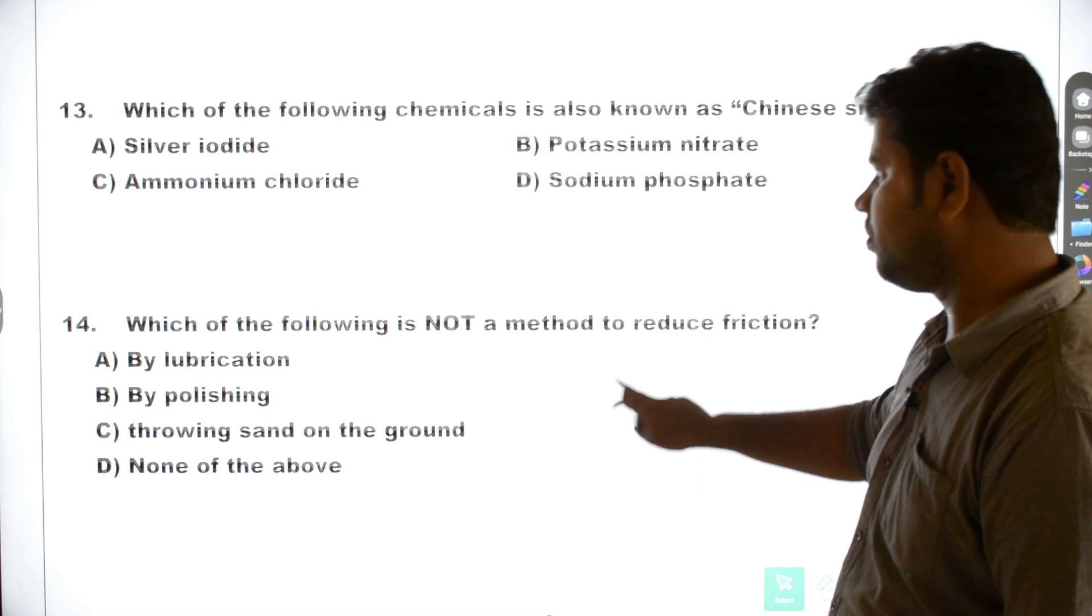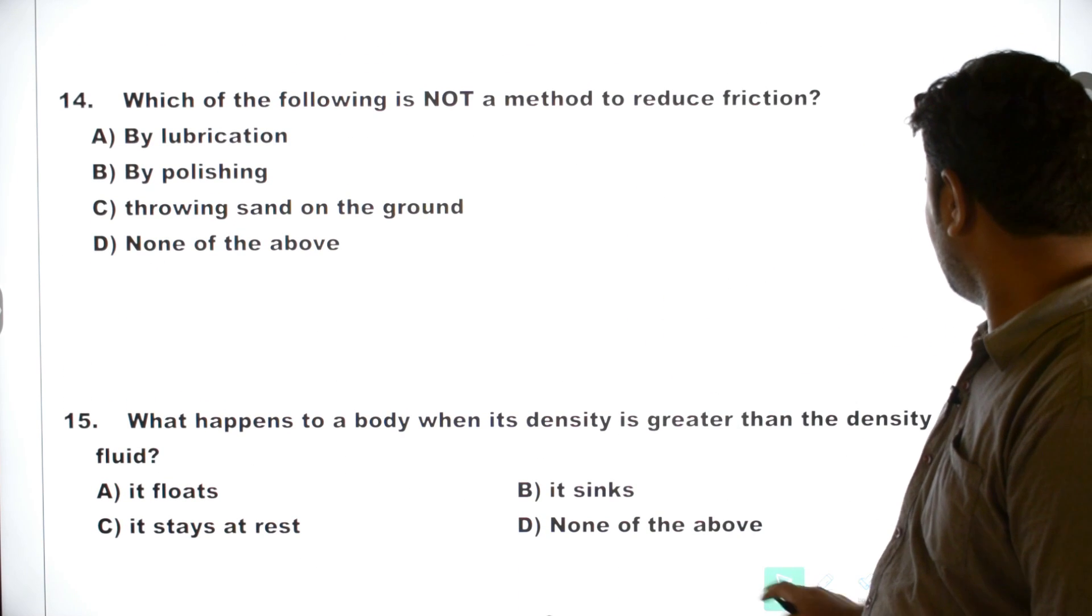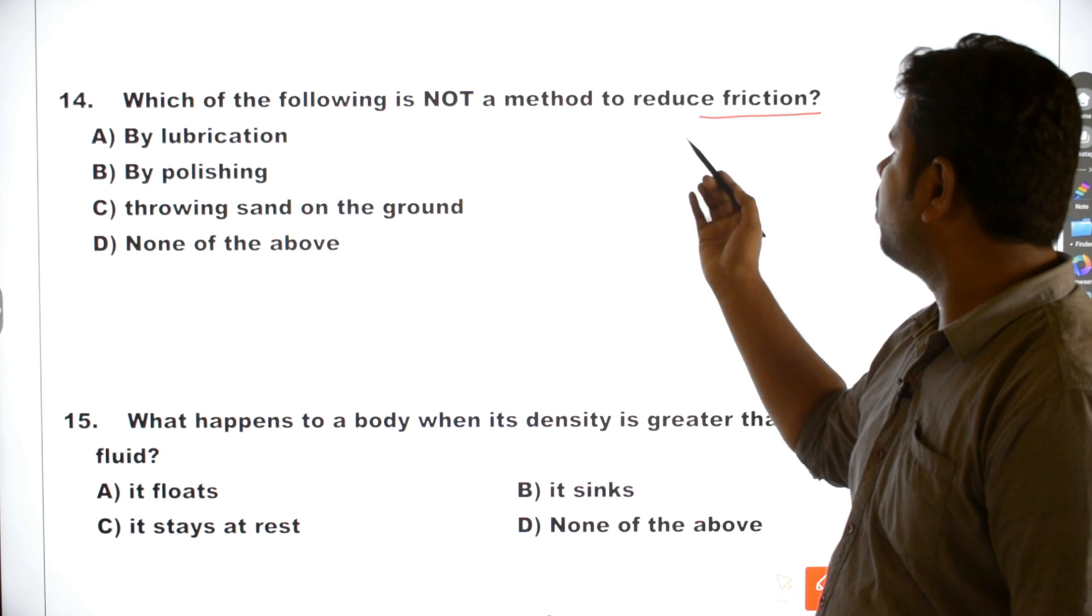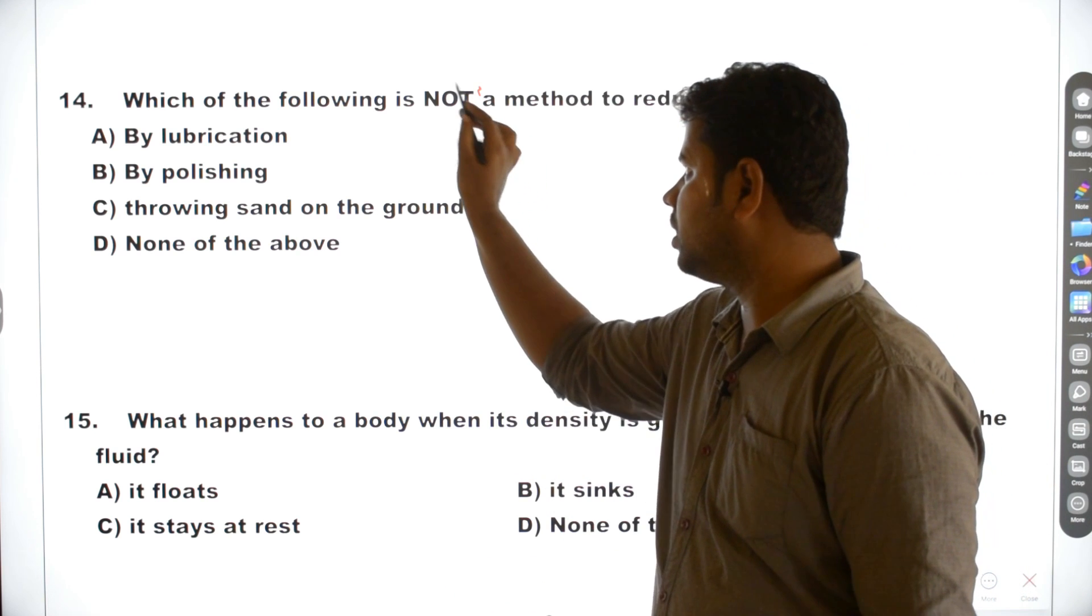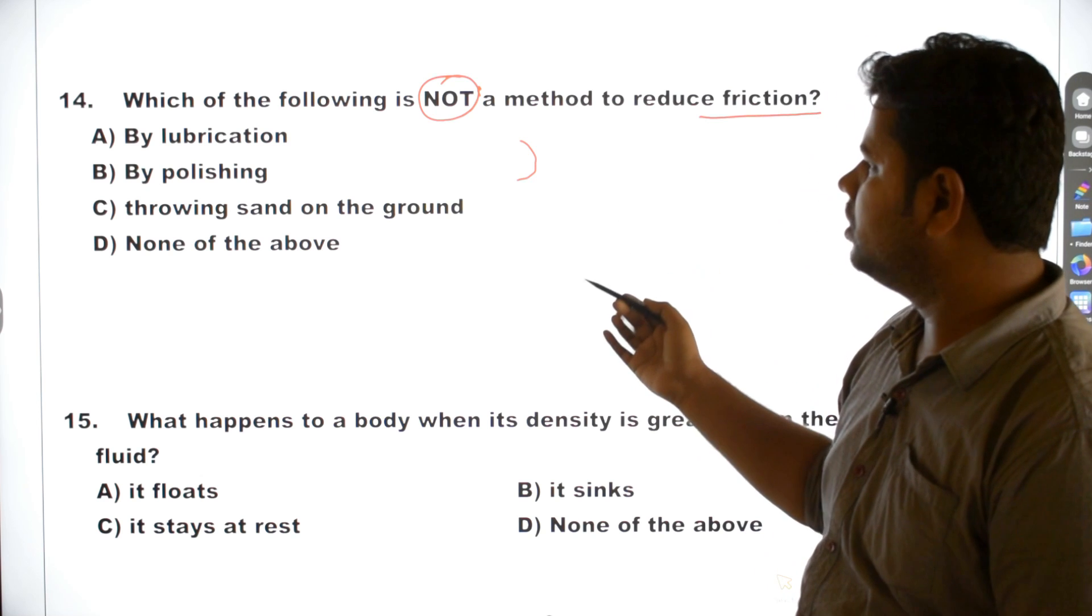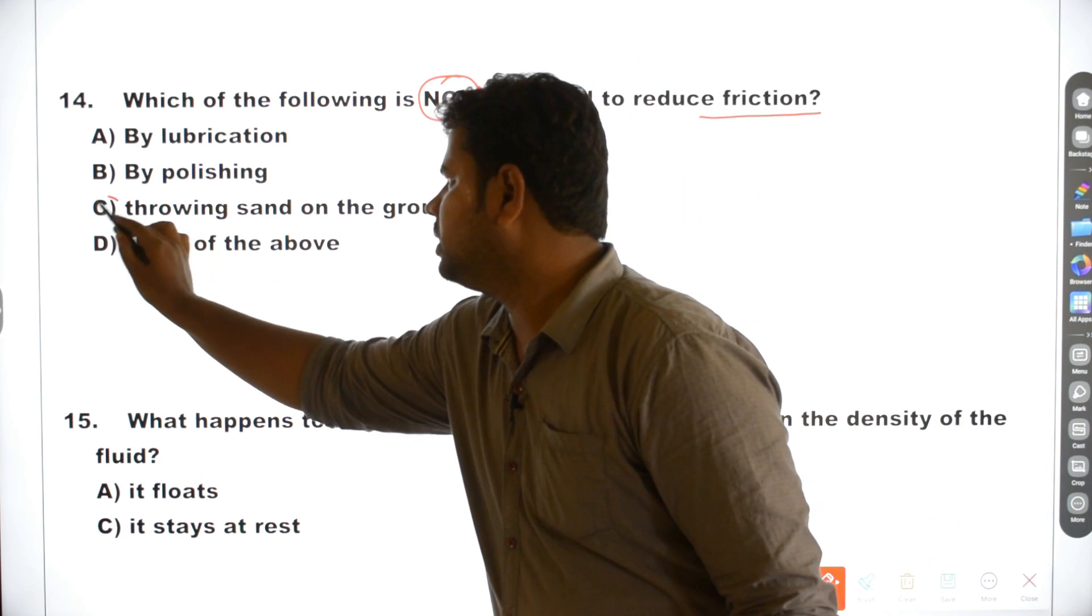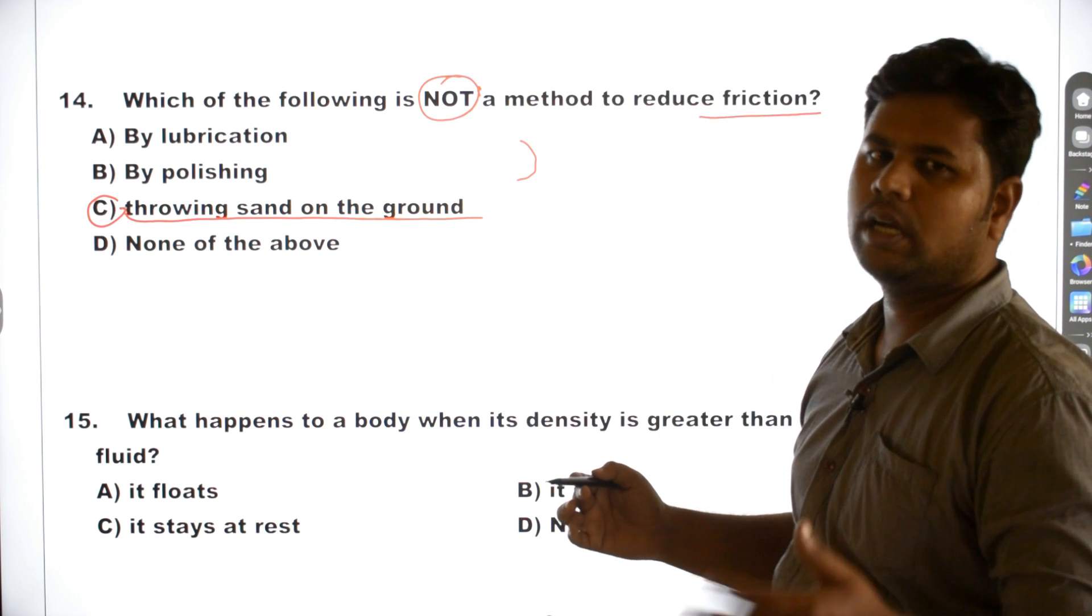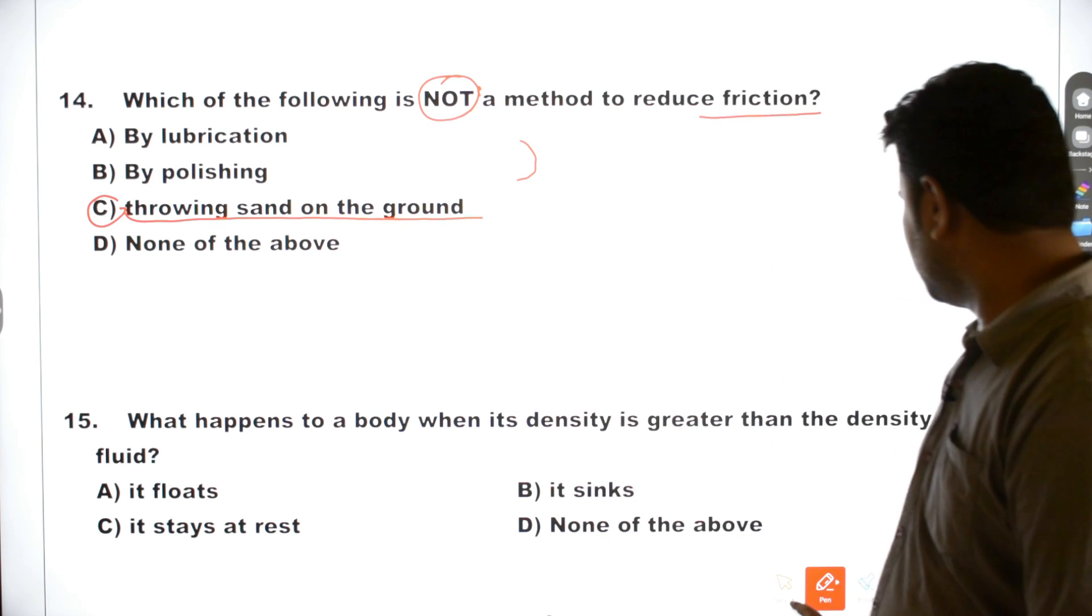Next question. Which of the following is not a method to reduce friction? Friction is not a method to reduce friction. Throwing sand on the ground, then one question is friction, that's why we say 14th question.